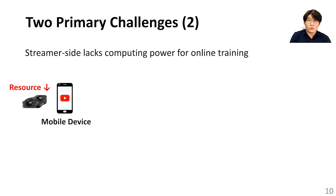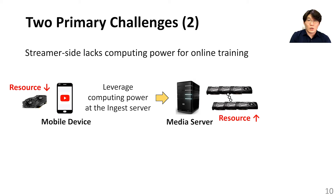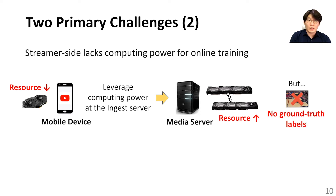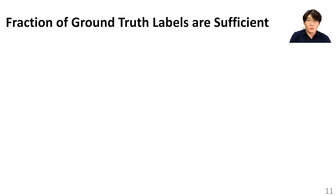Second, to train the DNN online requires powerful computing devices, but the computing power at the streamer site is heterogeneous. Instead, we can leverage the computing power at the ingest server, which is typically a cloud environment with ample computing resources. However, the challenge is that ground-truth labels for online training are not available at the media server. To address this challenge, we rely on our key observation that even a fraction of ground-truth labels are sufficient for online training.